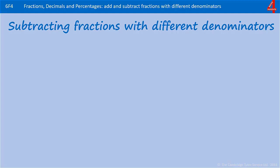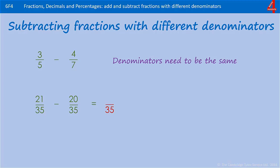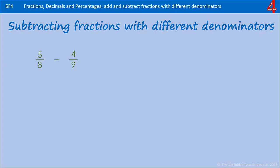Subtracting fractions is exactly the same except at the end you take away instead of adding. We still have to make the denominators the same. The lowest common denominator for 5 and 7 is 35. To get from 5 to 35 we multiplied by 7, so we do the same with the 3. To get from 7 to 35 we multiplied by 5, so we do the same with the 4. Now we can do the subtraction: 21 over 35 take away 20 over 35 leaves us with 1 over 35, and because there's only 1 it can't be simplified.